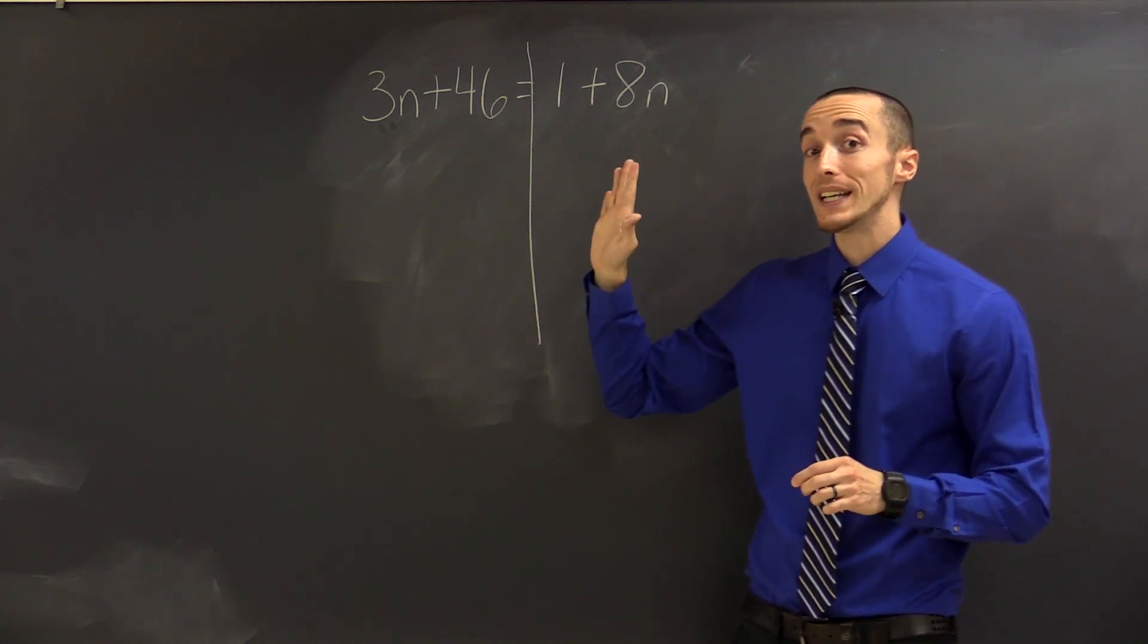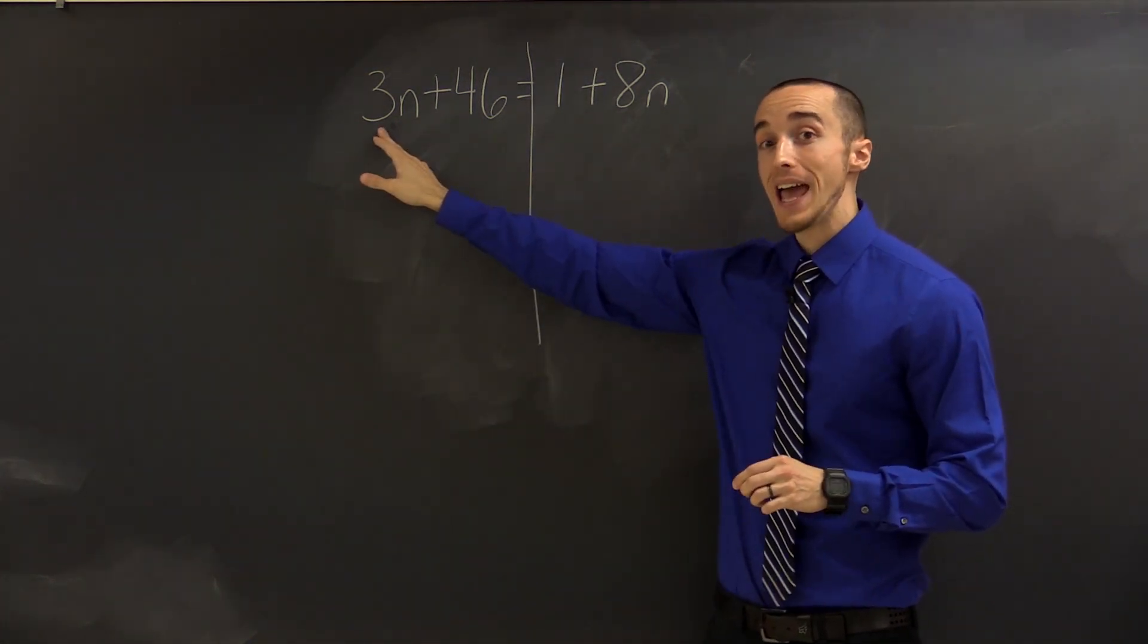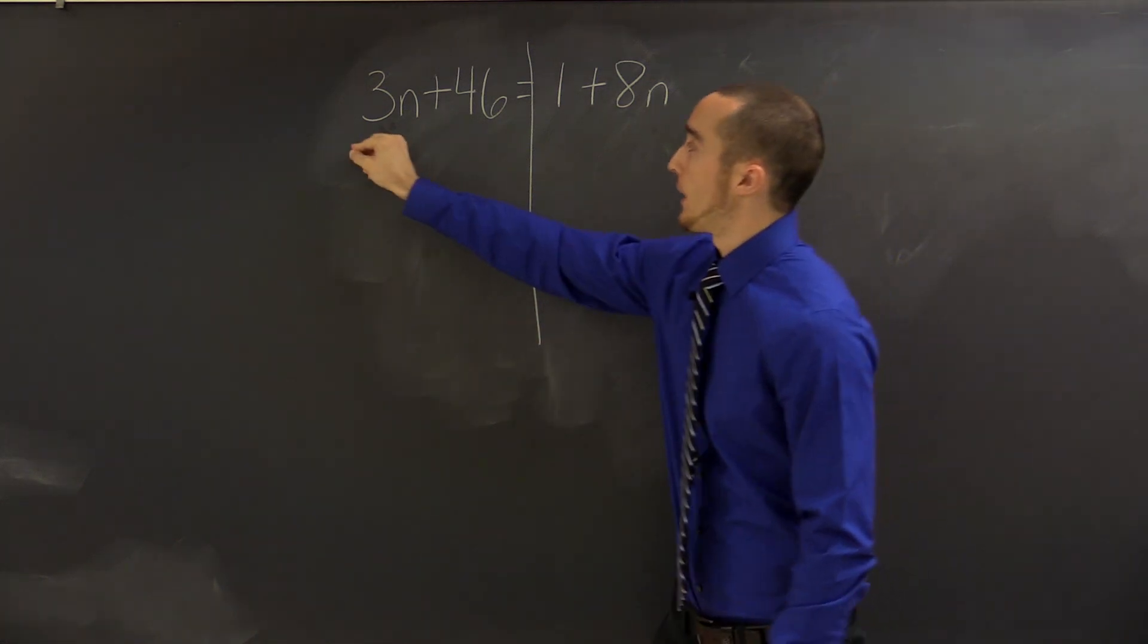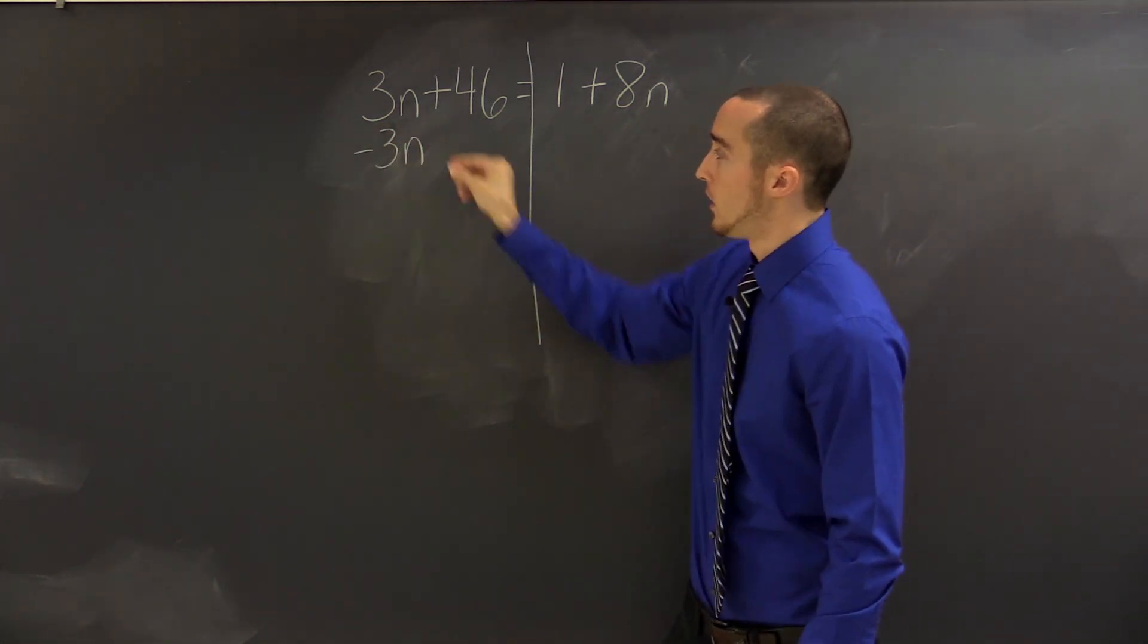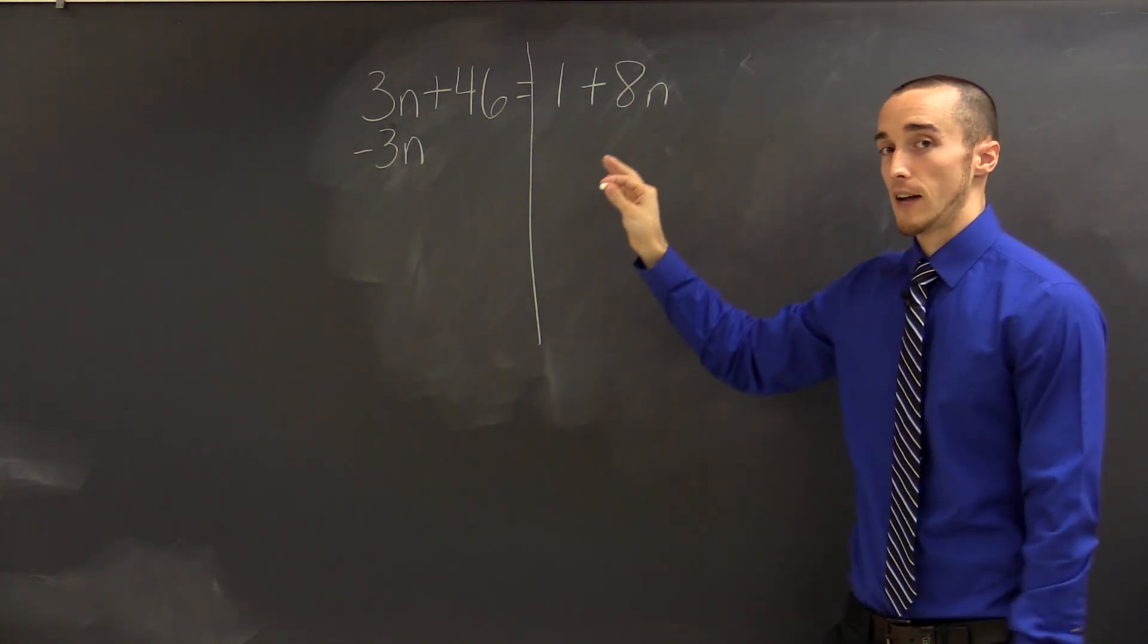If I'm going to go to the right, that means I want to get rid of variables on the left. There's 3n on the left. Using inverse operations, I can subtract 3n to cancel out that term. Now, of course, if I do that on the left, I have to do on the right.